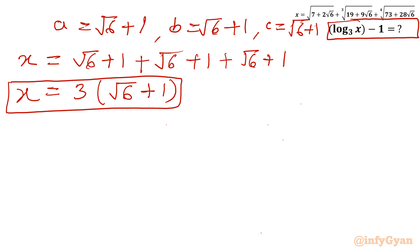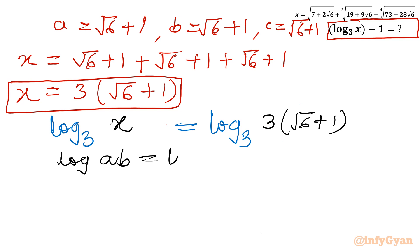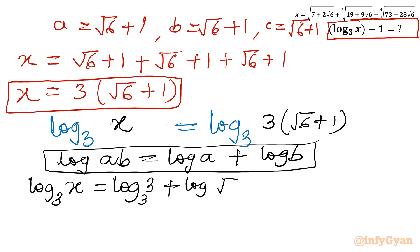Now I will take log with base 3 on both sides. So log base 3 of x equals log base 3 of 3 times (root 6 plus 1). Applying the log identity log(ab) = log a + log b, the right-hand side becomes log base 3 of 3 plus log base 3 of (root 6 plus 1).